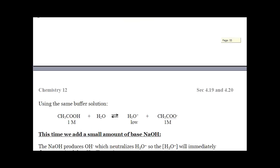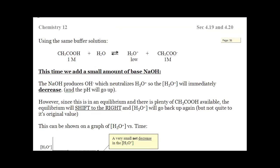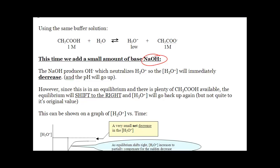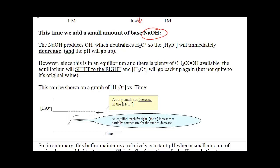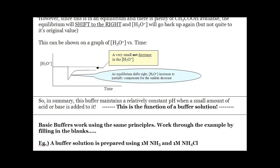The exact same thing happens when I add a base. If I add NaOH, it's going to remove H3O⁺ from equilibrium. This equilibrium has the ability to shift right to undo the change. When it undoes the change, it's going to bring H3O⁺ back up, but not quite to the original line. In essence, it resists the change in pH when a base is added. So I can add a strong acid or a strong base to this buffer, and it maintains a relatively constant pH because it's resisting the change.